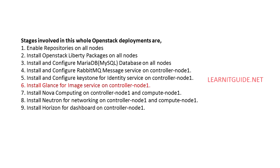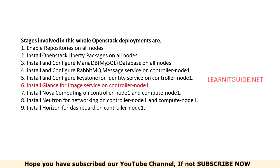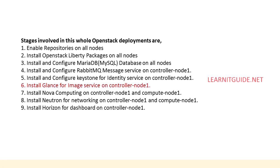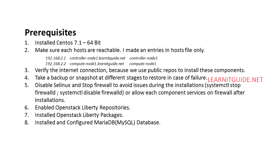The stages involved in this whole OpenStack deployment are: enabling the repository and installing OpenStack Liberty packages; installing and configuring MariaDB database, which is required on all nodes; installing RabbitMQ and Keystone for identity service; and now Glance — later on we will see Nova, Neutron, and Horizon. Prerequisites include: installing CentOS 7 64-bit on the controller node, ensuring each host is reachable, verifying internet connectivity, taking backups or snapshots at different stages, and disabling SELinux and stopping the firewall to avoid issues during installation.